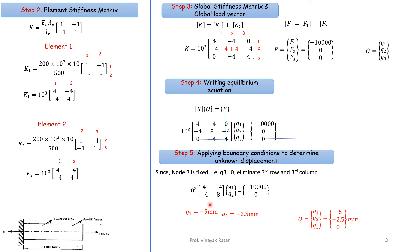Solving the two equations — 10³(4·q1 − 4·q2) = −10,000 and 10³(−4·q1 + 8·q2) = 0 — gives q1 = −5 mm and q2 = −2.5 mm. The global displacement vector is therefore: q1 = −5 mm, q2 = −2.5 mm, q3 = 0.